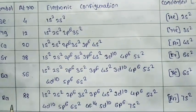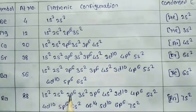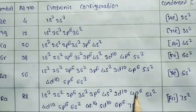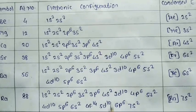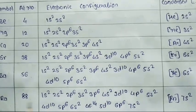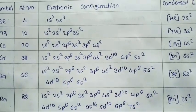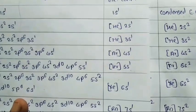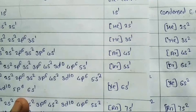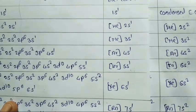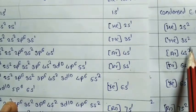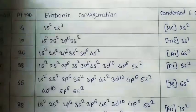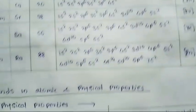Radium (Z=88): 1S2 2S2 2P6 3S2 3P6 4S2 3D10 4P6 5S2 4D10 5P6 6S2 4F14 5D10 6P6 7S2, condensed [Rn] 7S2. In both groups, the condensed electronic configuration uses the preceding inert gas (helium to radon). Group 1 has one electron in the s-subshell and group 2 has two electrons in the s-subshell.